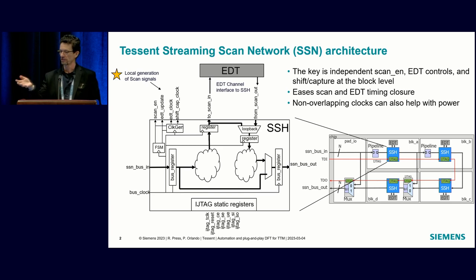We might be testing four cores at the same time, but the way SSN works, each core is timed independently. So even though they're all in test at the same time, one core can be doing a shift at a completely different time than another core, and another might be doing a capture at a different time. They don't have to align any of this.